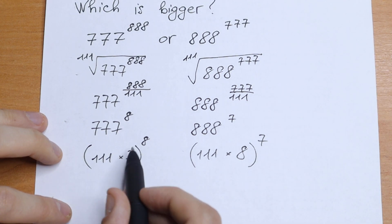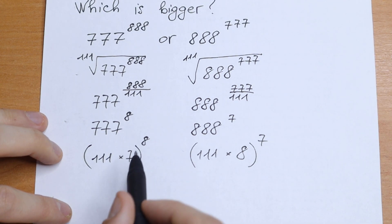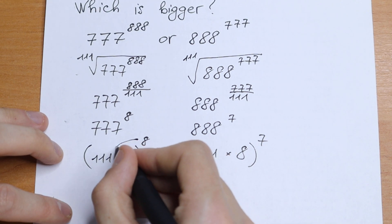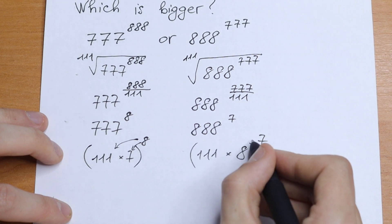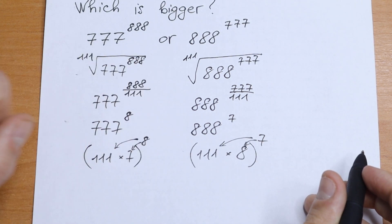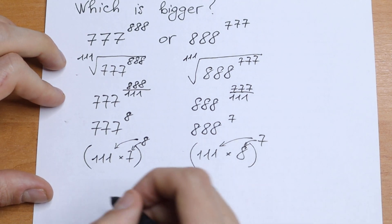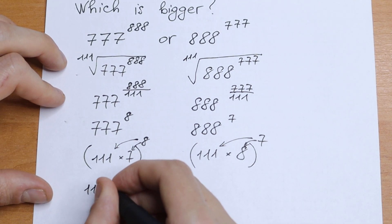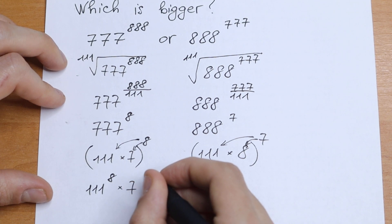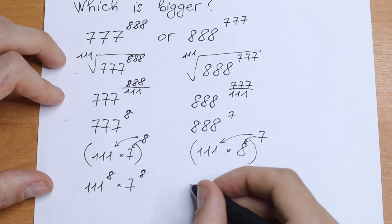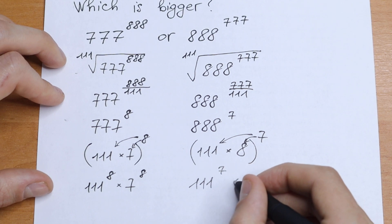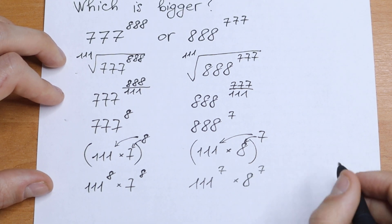We know the rule: if we have a product raised to a power, we need to raise all elements to that power. So we raise each factor separately. On the left: 111 to the 8th power times 7 to the 8th power. On the right: 111 to the 7th power times 8 to the 7th power.